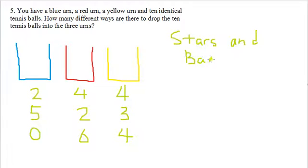What we're going to do is, in this case, we're going to have 10 bars, which correspond to... oh sorry, we're going to have 10 stars, which correspond to the 10 tennis balls we put in, and we're going to have two bars. Let me show you how we do that in this case.